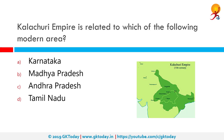The Kalachuri Empire is related to which of the following modern areas? The correct answer is Madhya Pradesh. The Kalachuris were an Indian dynasty that ruled in west-central India between the 6th and 7th centuries. They are also known as Haihay as or the early Kalachuris. The Kalachuri territory included present-day Gujarat, Madhya Pradesh and Maharashtra.